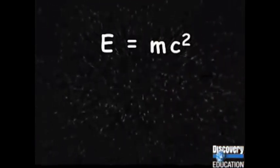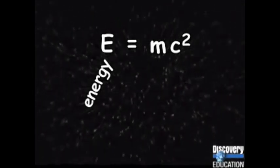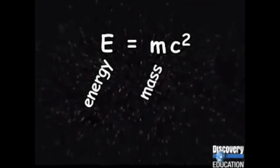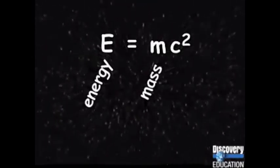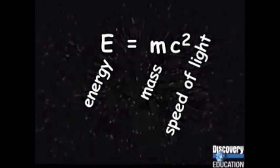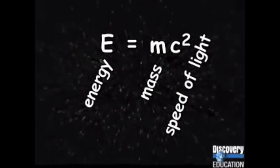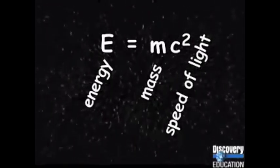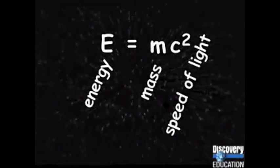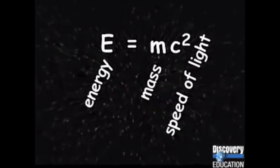Maybe you have seen Albert Einstein's famous formula, E equals MC squared. The E stands for energy. The M represents the mass of an object. And C stands for the speed of light, which is 186,000 miles, or 300,000 kilometers, per second. What this means is that even a very small amount of material can release an incredible amount of energy.